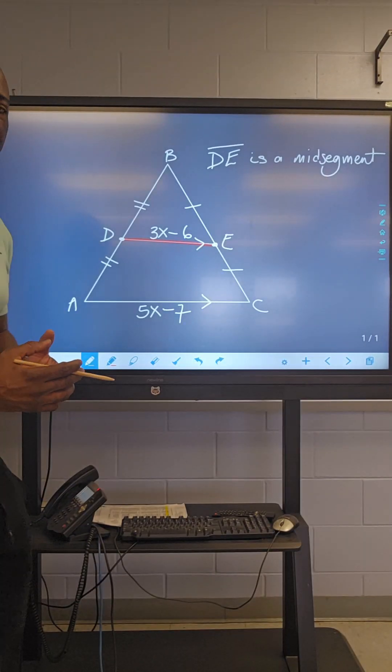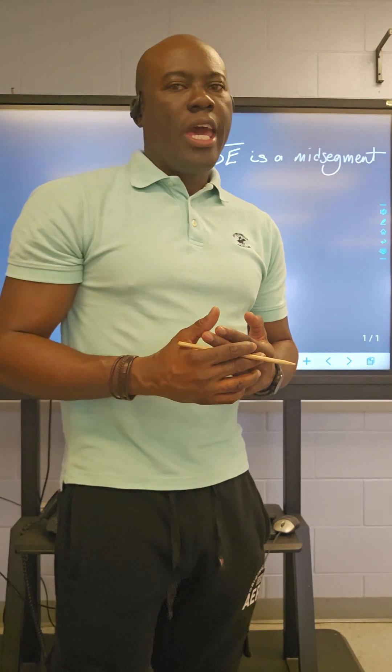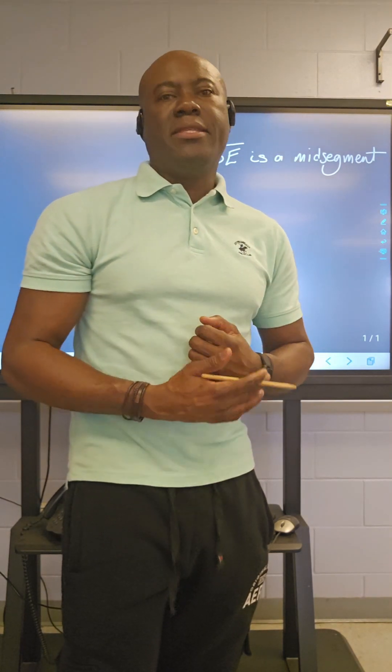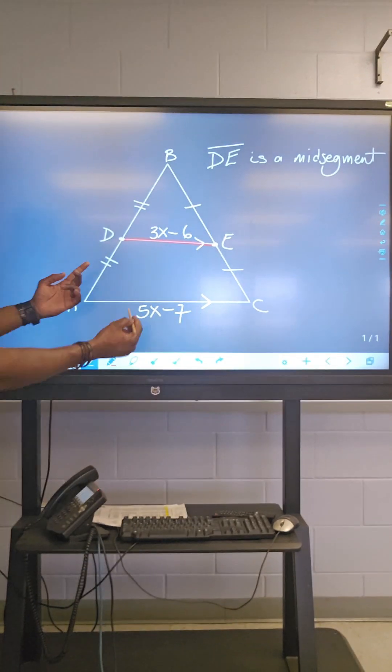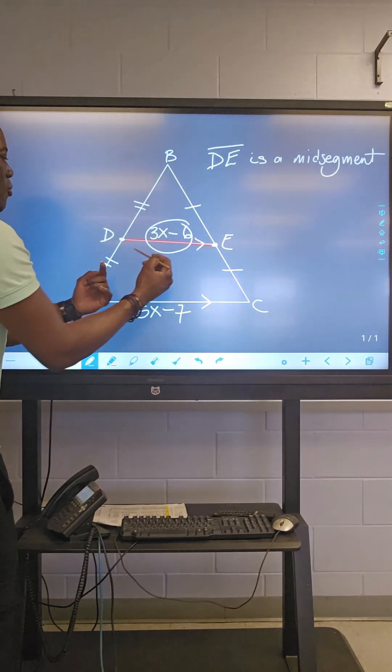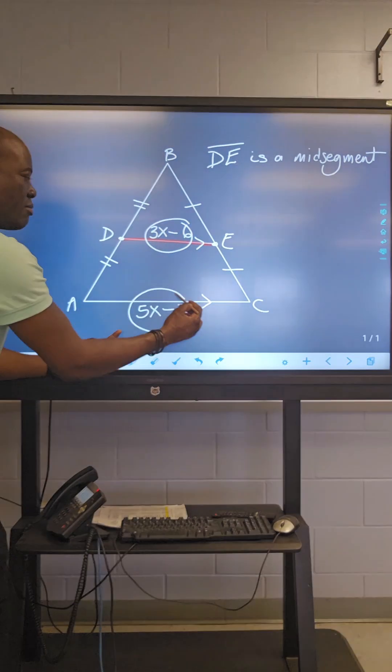It is a mid-segment. And the theory suggests that two times the mid-segment is equal to the third side. So, two times this will be equal to this.